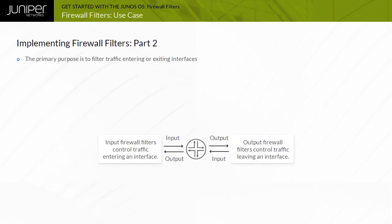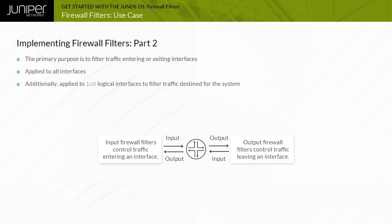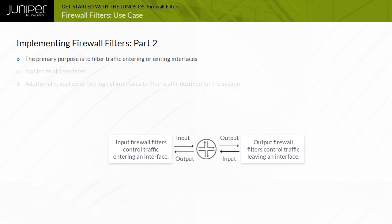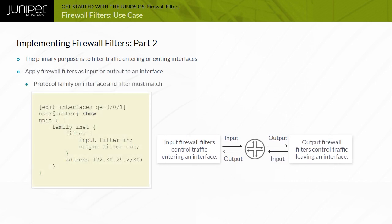Although you can use firewall filters to filter traffic at several points, their primary purpose is to filter traffic entering or exiting interfaces. You can apply them to all interfaces. You can also apply them to the LO0 logical interface to filter traffic destined for the system. You can apply IPv4 firewall filters to interfaces in the Edit, Interfaces, Interface Name, Unit, Unit Number, Family, INET filter hierarchy.